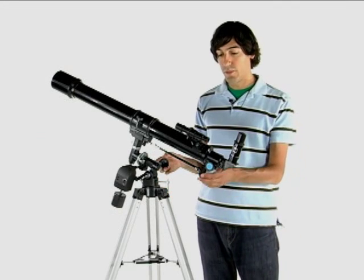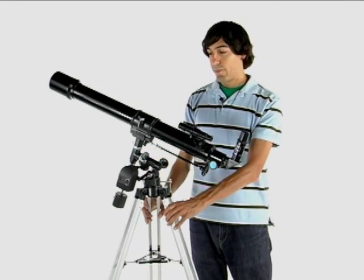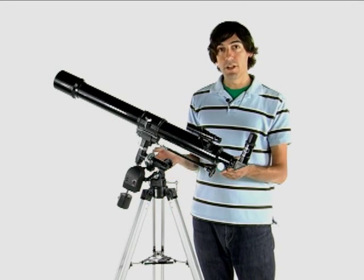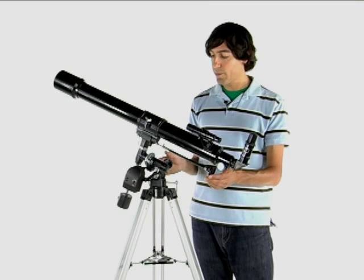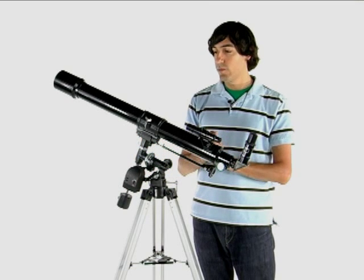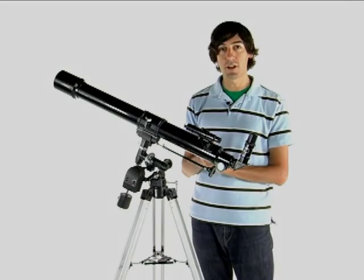Now this is what your telescope will look like once it's fully assembled. Now you can go out and get ready stargazing. All you have to do now is just align it up, set your weight, balance it out. Pretty simple. And start stargazing.